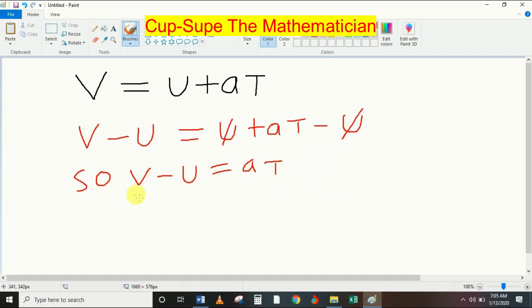So now I'm going to divide both sides by A because I really want to make T the subject of the formula. I'm going to rewrite this down here. V minus U equals AT. I'm going to divide both sides by A.